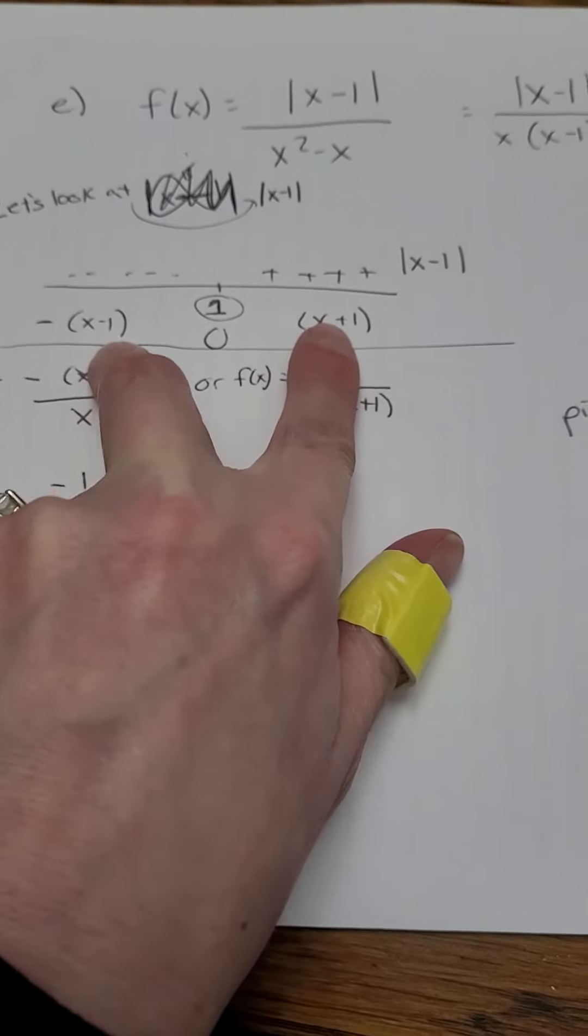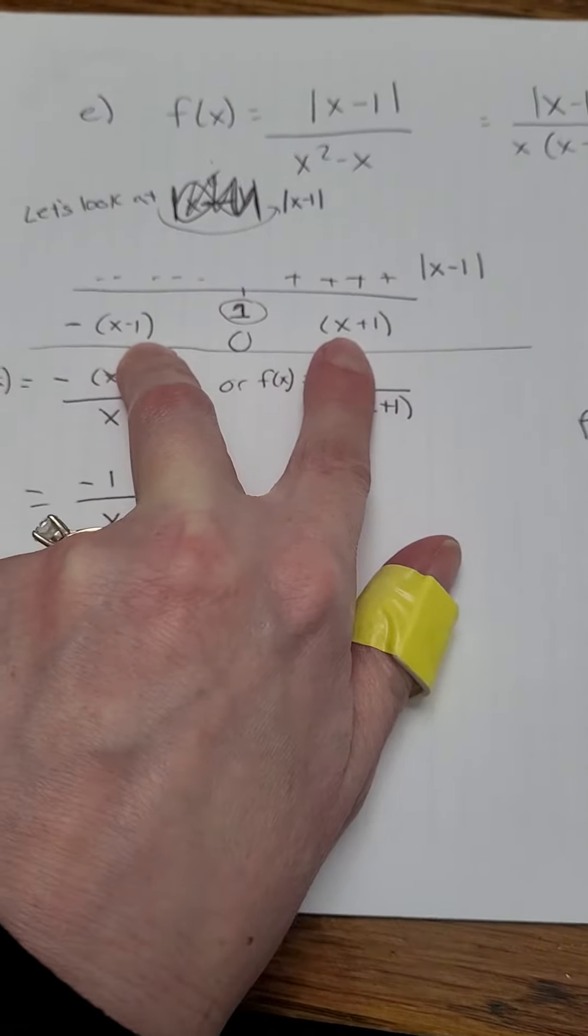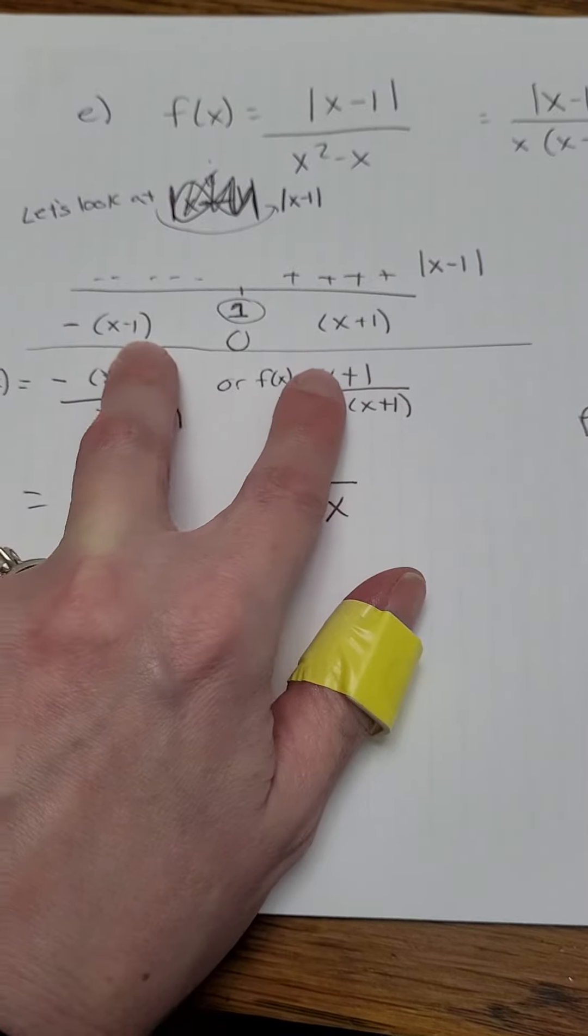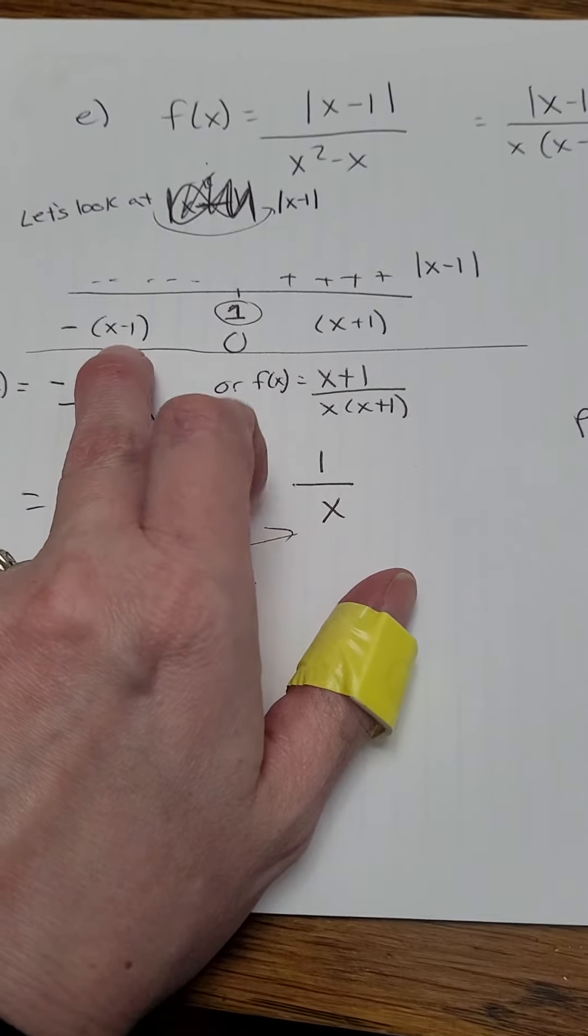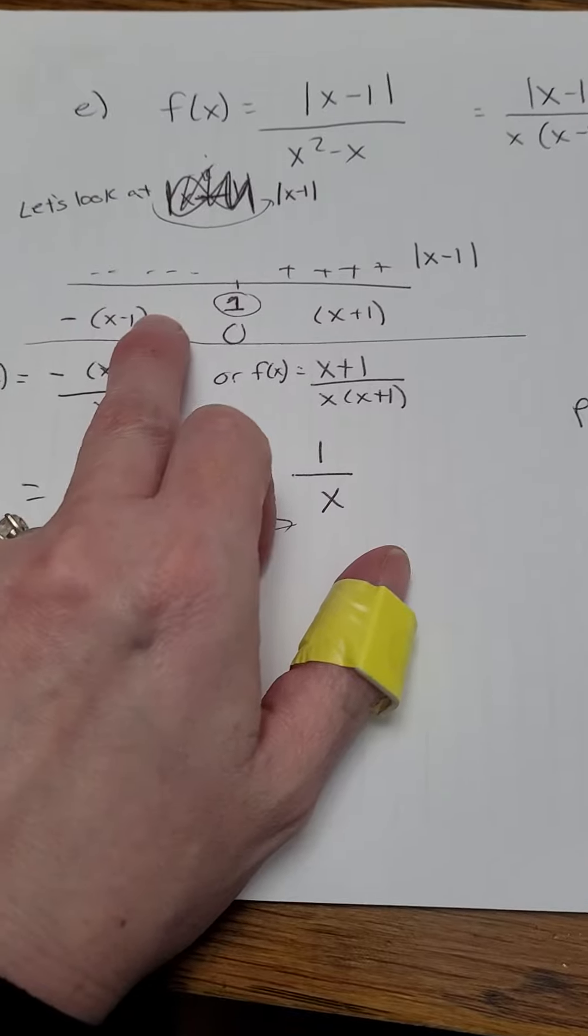So make sure you understand why in an absolute value, either it looks like itself when it's positive or it looks negative when we have a negative value.